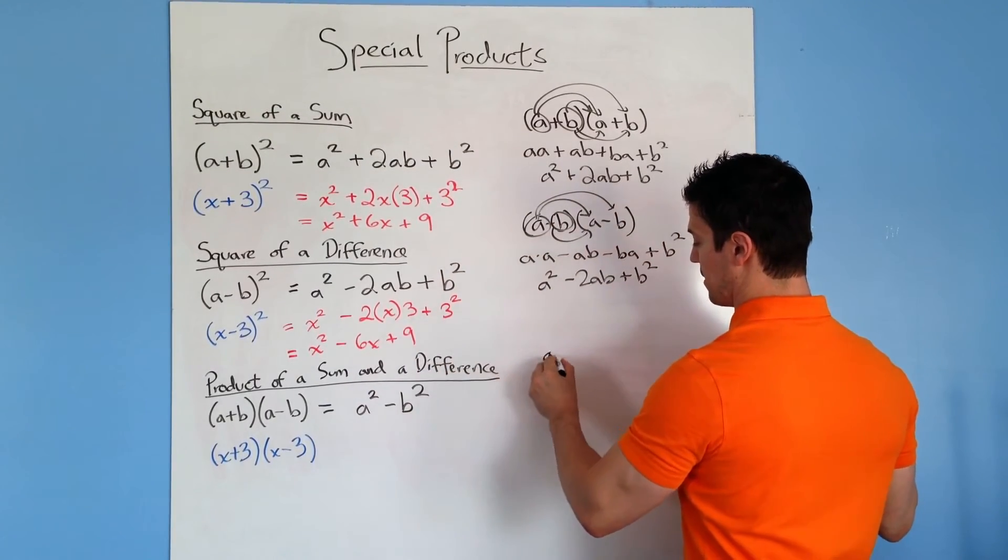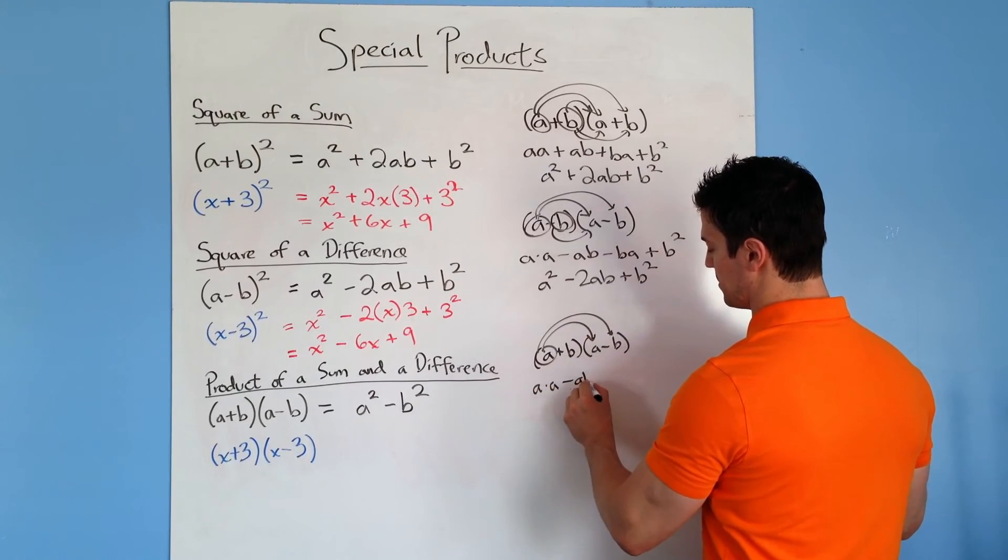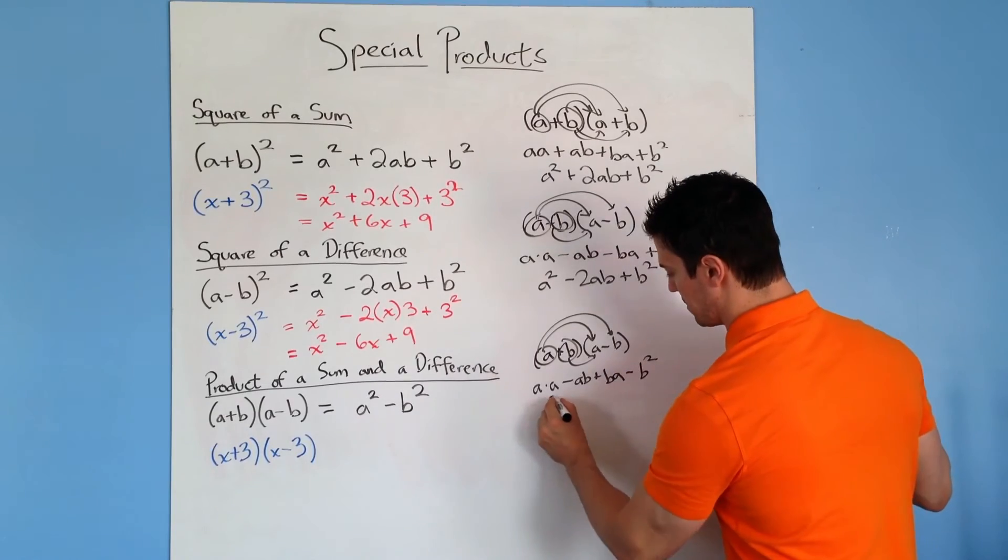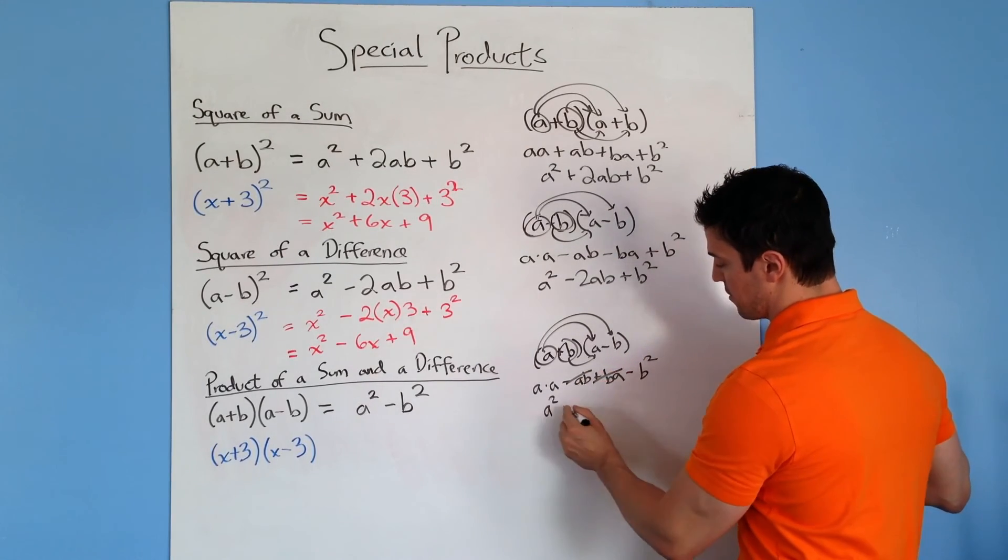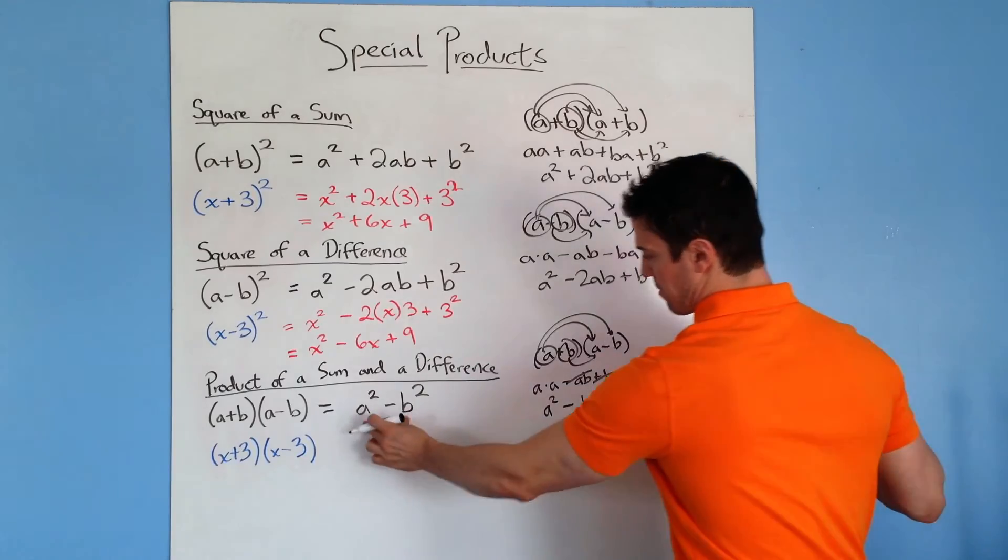I'll show you the work for this. And you end up with a squared minus b squared, which is right here.